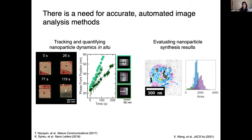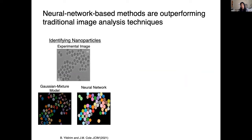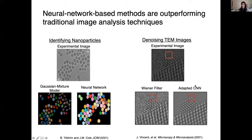Some of the most promising methods now are based on neural networks, a specific type of machine learning. In this example, for the task of identifying nanoparticles in an image, the neural network just vastly outperforms a Gaussian mixture model — another type of machine learning — doing a much better job at picking up nanoparticle features. This is also true for other image analysis tasks like denoising. Taking high-res TEM images at low signal-to-noise ratios, the neural network denoises much better than traditional filter techniques. So what exactly makes neural networks so powerful? At their core, neural networks are universal function approximators — they can take on any functional form, including extremely nonlinear equations.